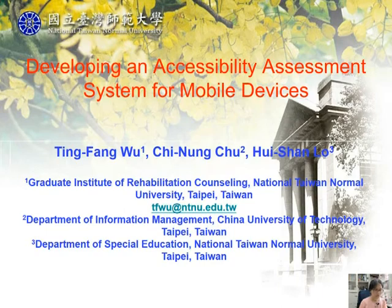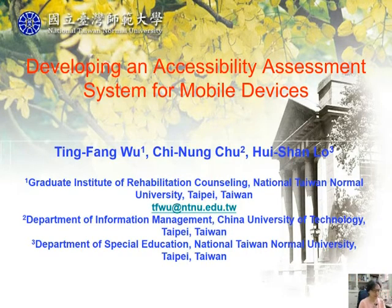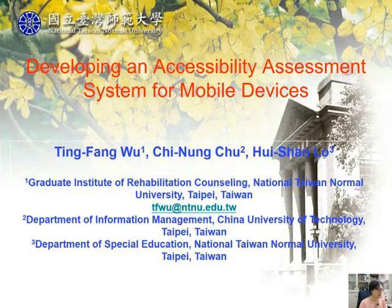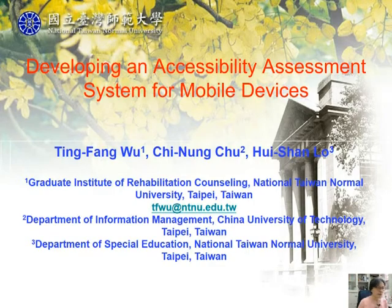Hello everyone. Welcome to the presentation. This is Ting Fang Wu from National Taiwan Normal University, Taipei, Taiwan. The topic I'm going to present is developing an accessibility assessment system for mobile devices. I have done this work with my colleagues, Qi Nong Chu and Hui San Ruo. Qi Nong Chu is an assistant professor from the Department of Information Management, China University of Technology. Hui San Ruo is a doctoral student in the Department of Spatial Education at National Taiwan Normal University.